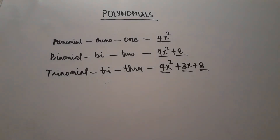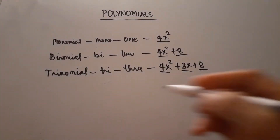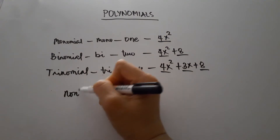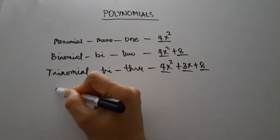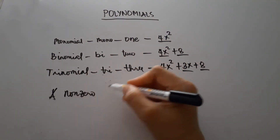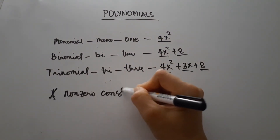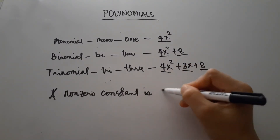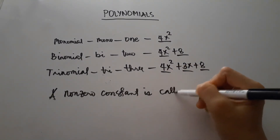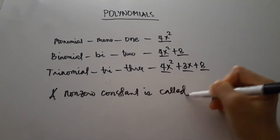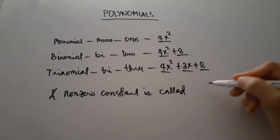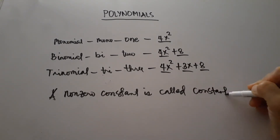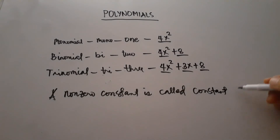A non-zero constant, such as positive 8 from the trinomial example 4x squared plus 3x plus 8, where positive 8 is a non-zero constant, is what we call a constant polynomial.